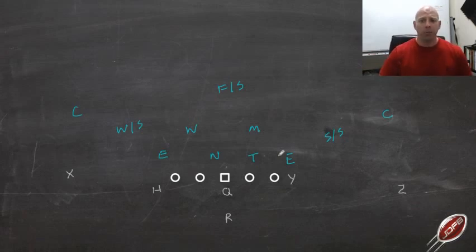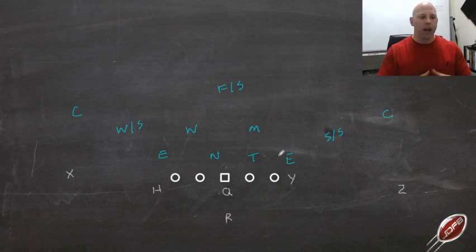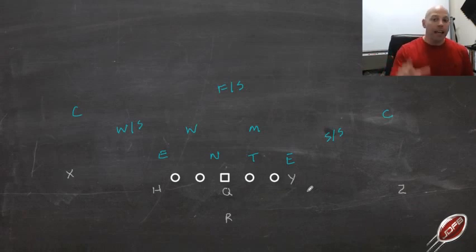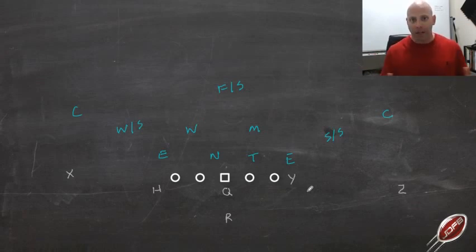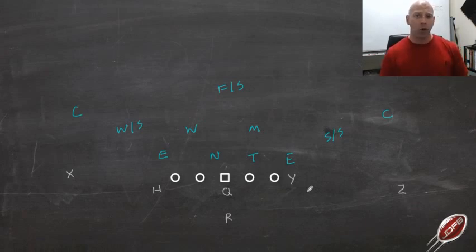That guy is going to be your C-gap defender. A lot of coaches run a 7-technique, playing inside shade of the tight end. I do that if our guy is not very good — just average — or with our young guys like JV or freshmen, who will probably play a 7-technique inside shade. If you're working at a youth level, the 6-tech might not be the best thing unless you've got a stud who can handle it, because it does involve a lot more teaching.